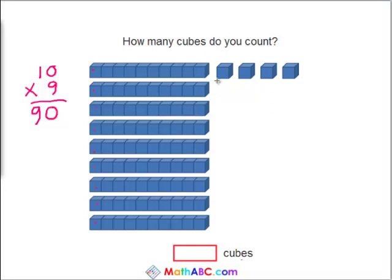And how many more are over here? Yes, 1, 2, 3, 4. 90 plus 4 equals 94. We know we have 94 cubes in total.